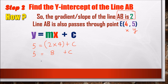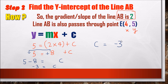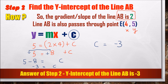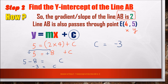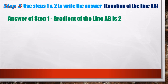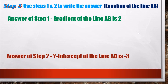Now let's solve for c. We move 8 to the left side of the equation — since it was positive on the right, it becomes negative on the left — giving us c = 5 − 8 = −3. So the y-intercept of line AB is −3. Step 2 is complete: the gradient of line AB is 2 and the y-intercept of line AB is −3.